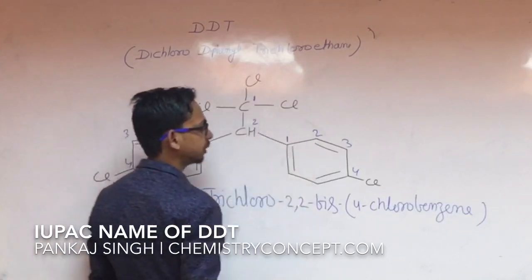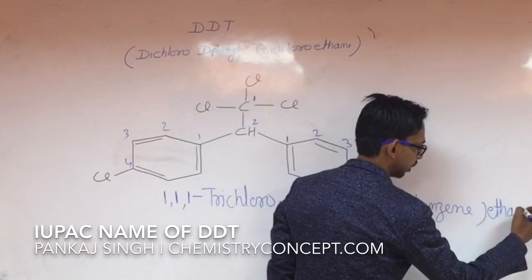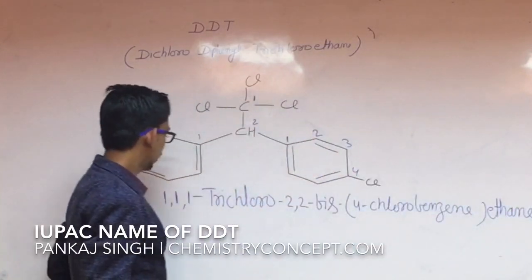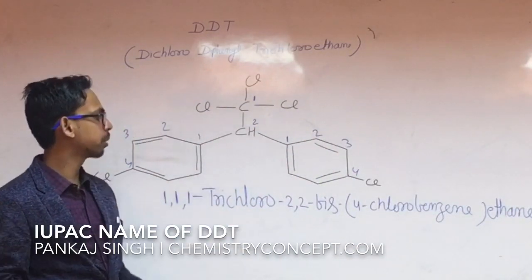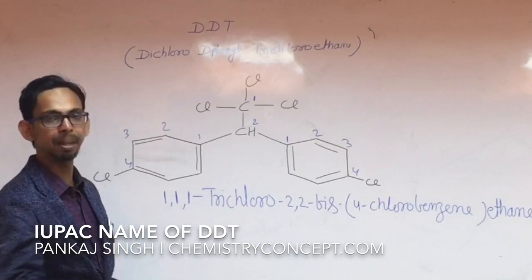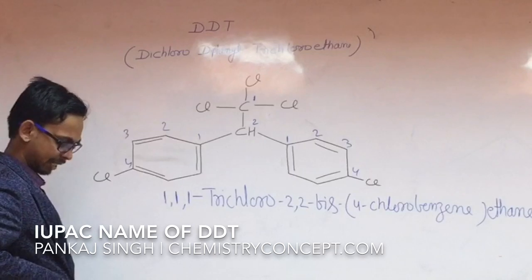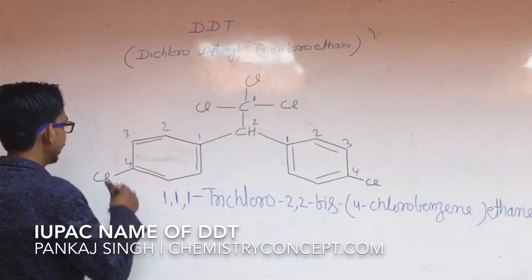So this is the name: 1,1,1-trichloro-2,2-bis(4-chlorobenzene)ethane. This is the first way of naming. Second way of naming: in the second way of naming, it is assumed that the main group is this chlorobenzene.